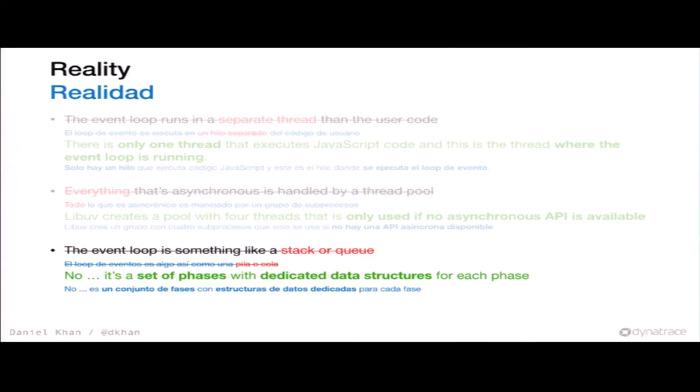Third: the event loop is not something like a stack or a queue — it's a set of phases. Each phase has some data structures which may be stacks or queues, but the whole process runs through phases, not traversing a single stack. Now it's my turn to create something you'd find in a Google image search.